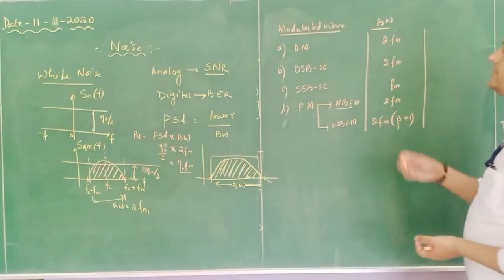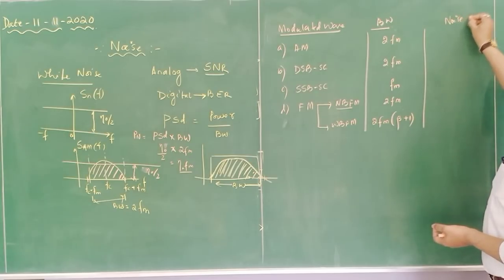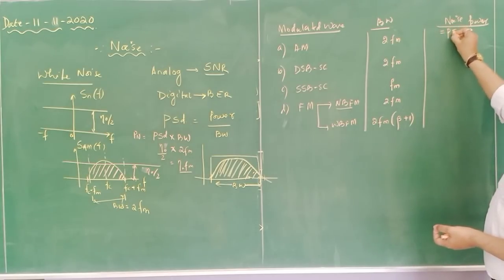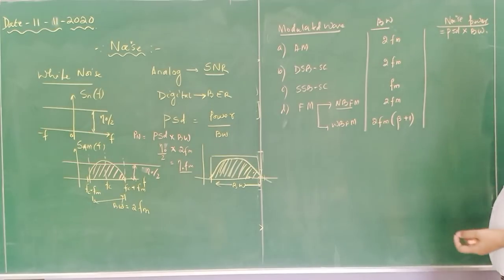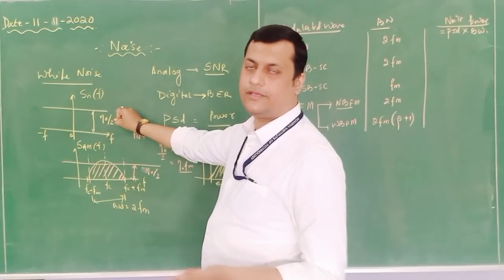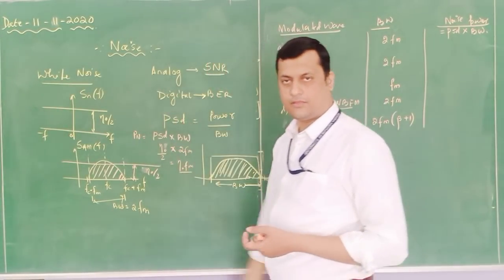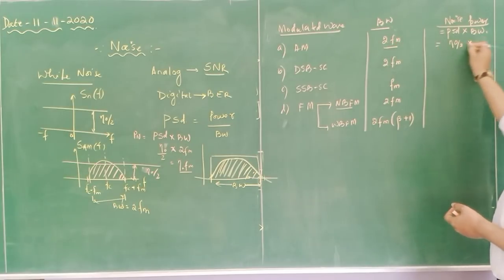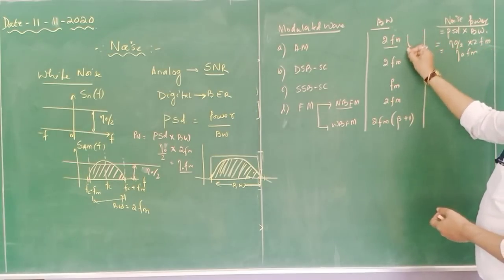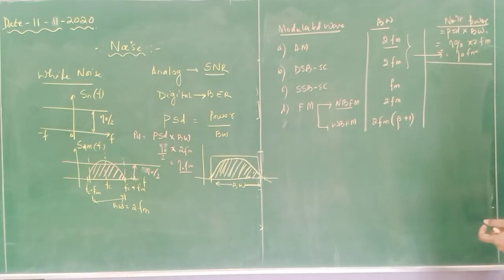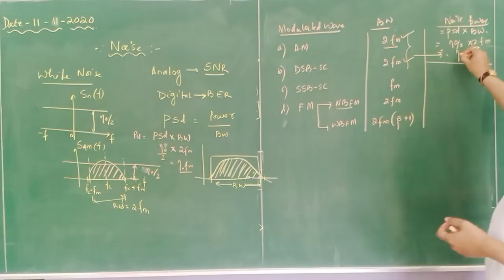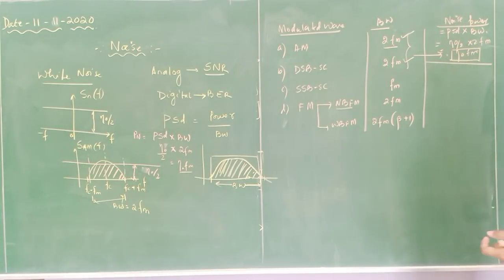Now, the noise power equals power spectral density multiplied by bandwidth. For white noise, PSD is η₀/2, which is constant throughout the frequency spectrum. For AM (bandwidth 2fm): noise power = η₀/2 × 2fm = η₀·fm. For DSB-SC (bandwidth 2fm): noise power = η₀·fm. For SSB-SC (bandwidth fm): noise power = η₀/2 × fm = η₀·fm/2. For NBFM (bandwidth 2fm): noise power = η₀·fm. For WBFM (bandwidth 2fm(β+1)): noise power = η₀·fm·(β+1).